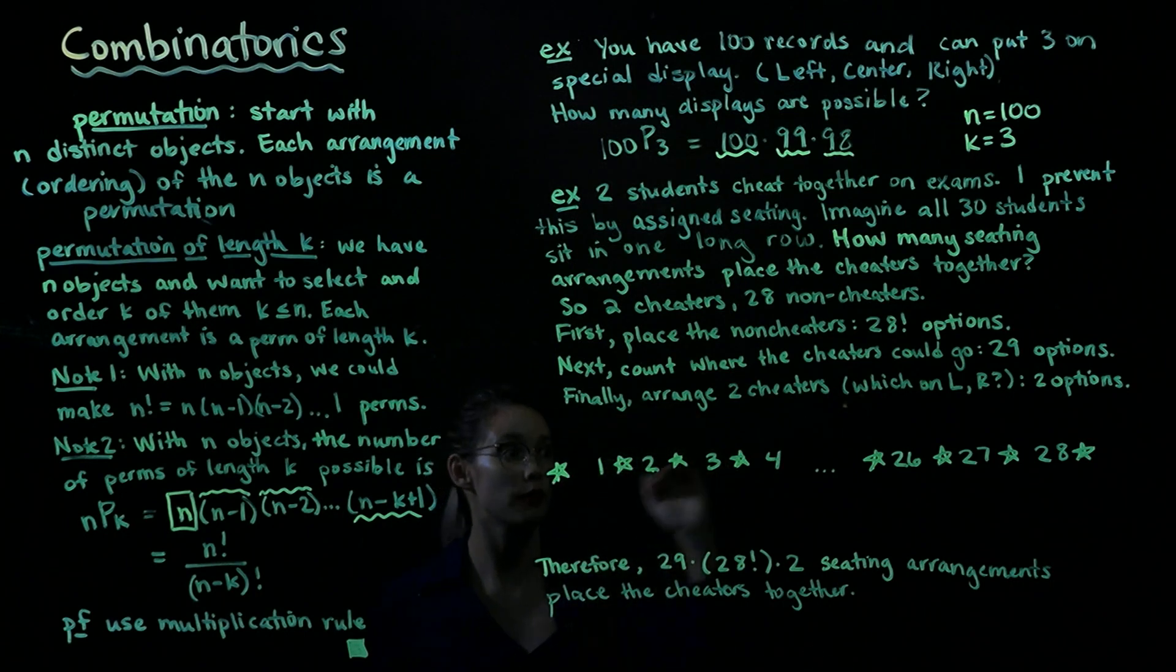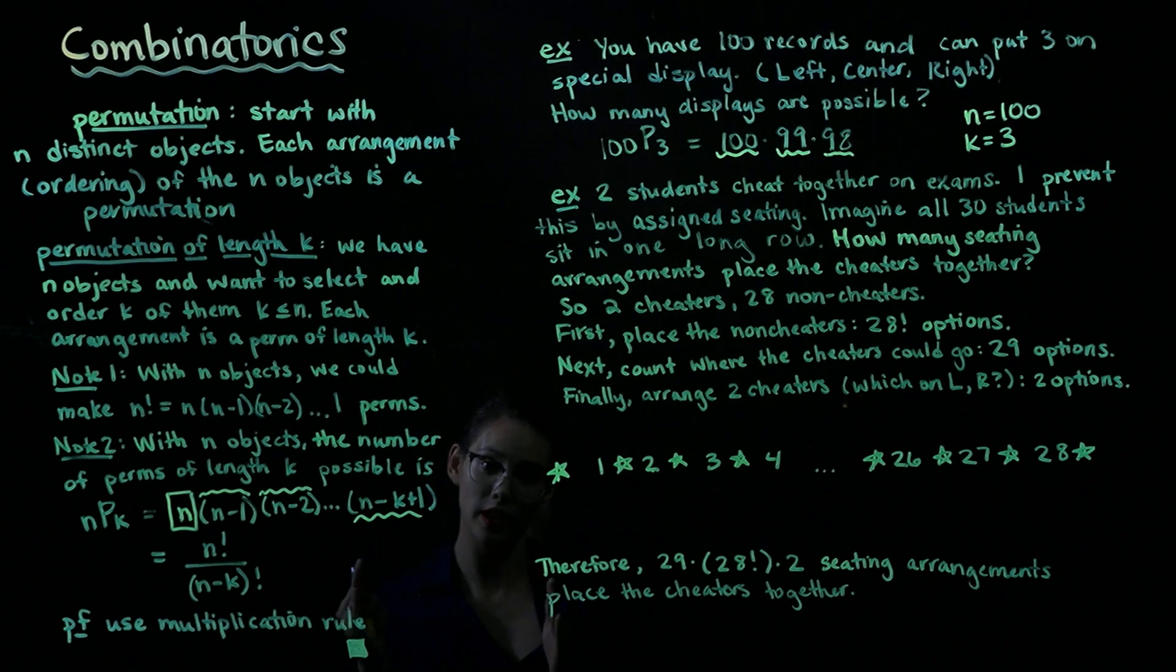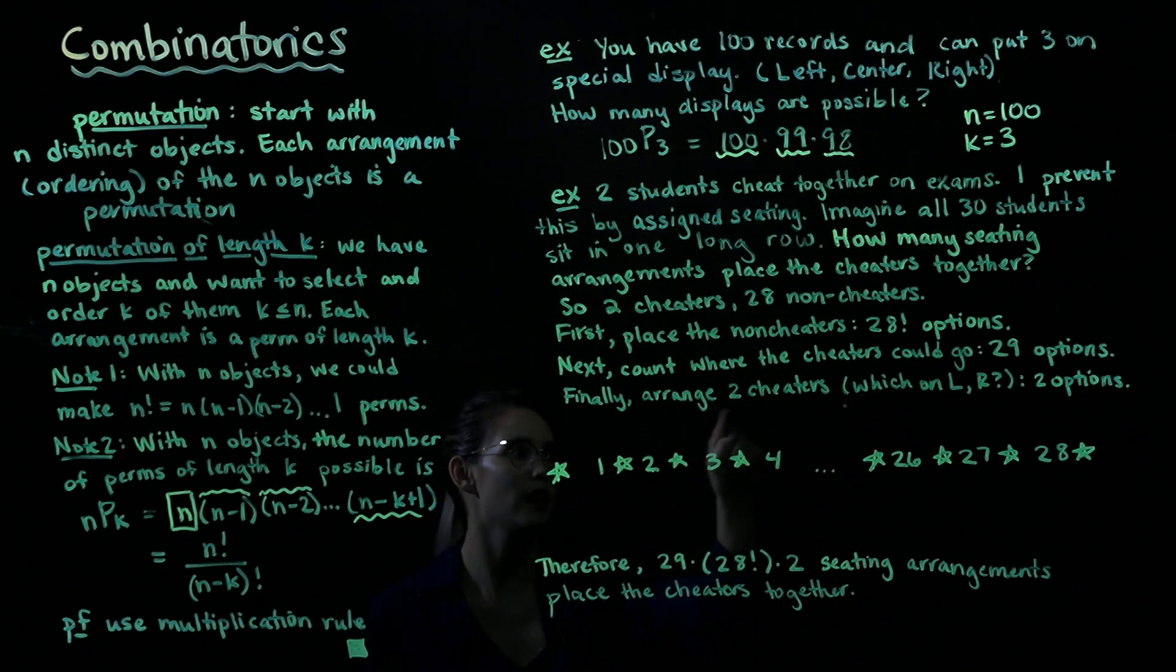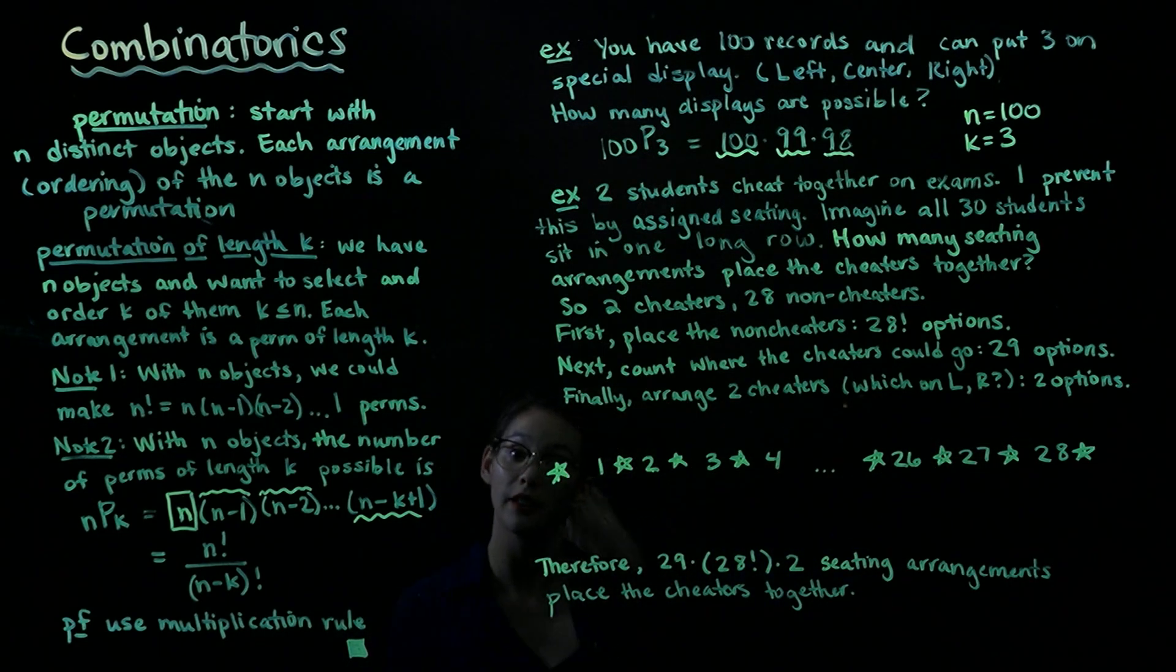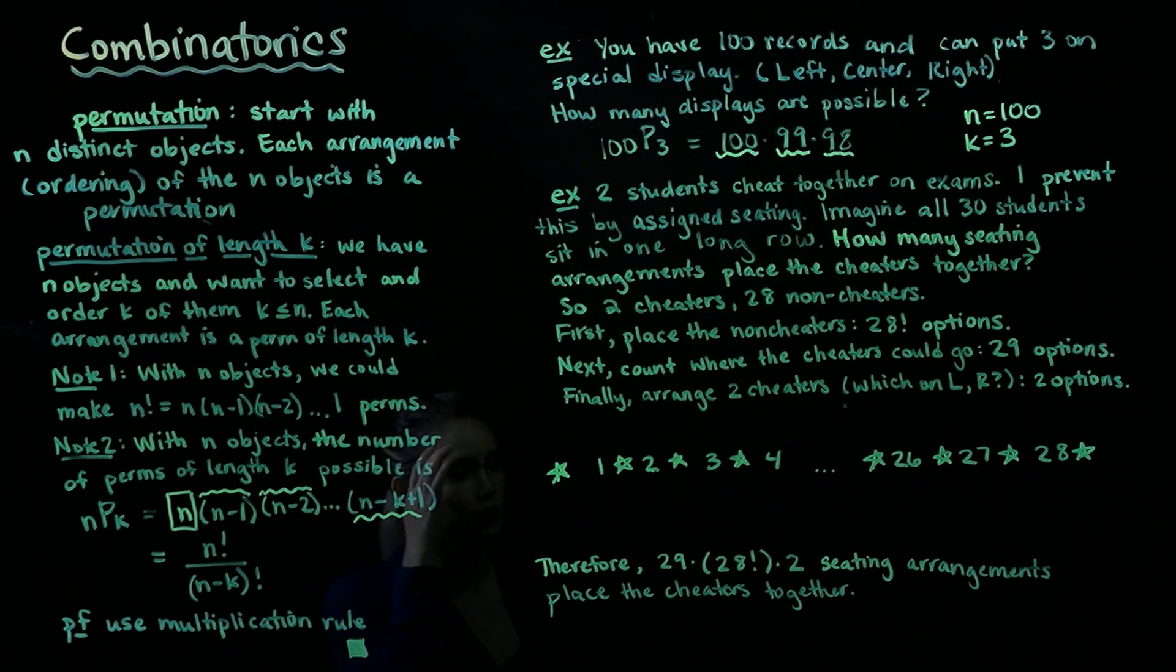And now once we've figured that out, we can arrange the two cheaters. Do we want cheater 1 on the left or do we want cheater 1 on the right? So there's two ways to arrange them. We have just two options for who goes on the left and who goes on the right. So now we can put this all together with our multiplication rule.